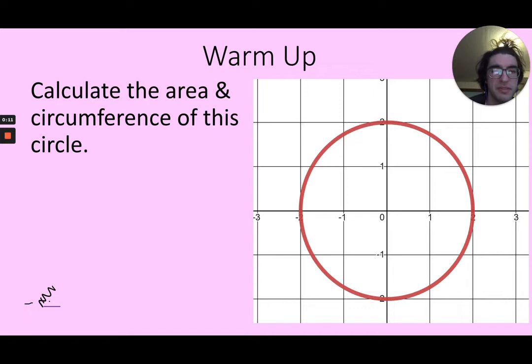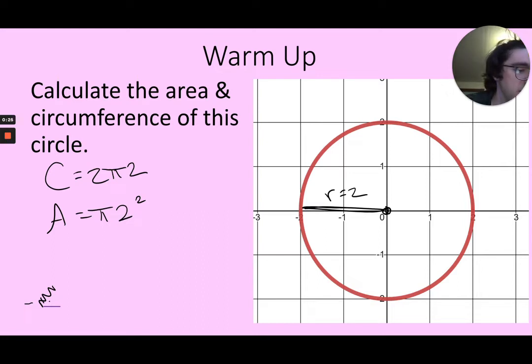So first, find the area and circumference of this circle, which I can see the center is right in the origin. So it looks like the radius is 2, so then the circumference is 2 pi r, the area is pi r squared. And I believe for both of these, we actually get the same thing. It's 12.57.